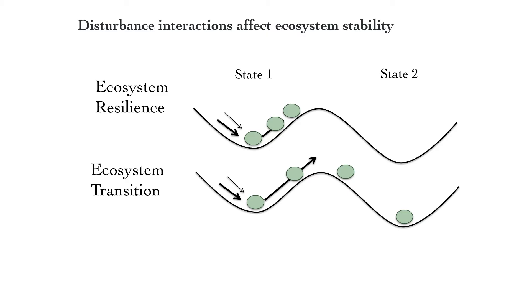This is a classic ball-and-cup heuristic of ecosystem stability. The trough represents the stability domain and the ball represents the system itself. You can imagine two scenarios in which multiple disturbances affect two ecosystems. Depending on the magnitude of the effect, we see either ecosystem resilience — whereby the system is perturbed but returns to its pre-disturbance state — or an ecosystem transition or a state shift.